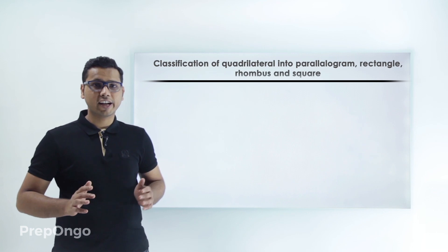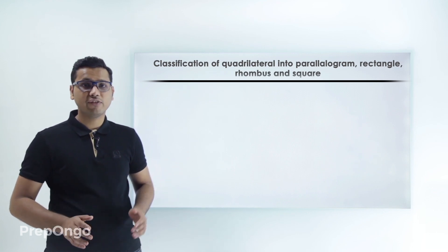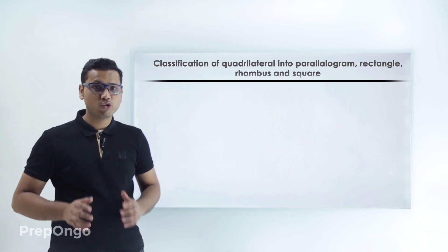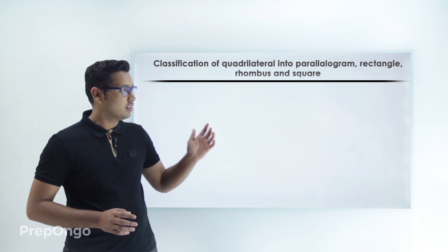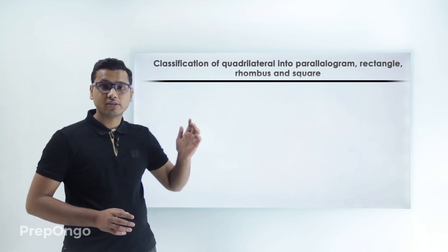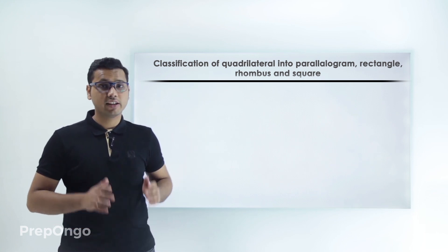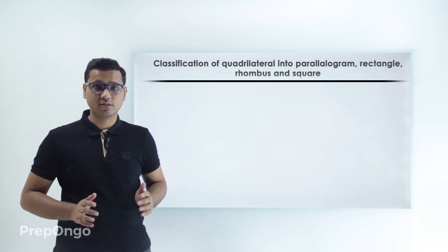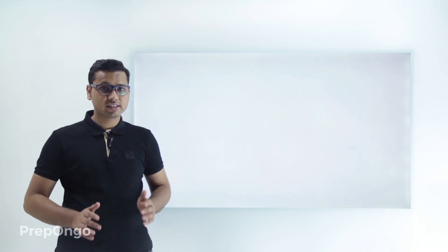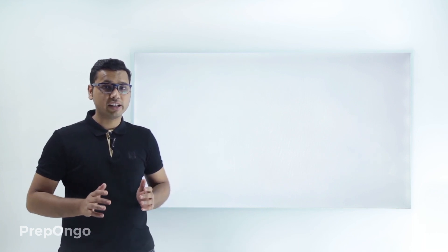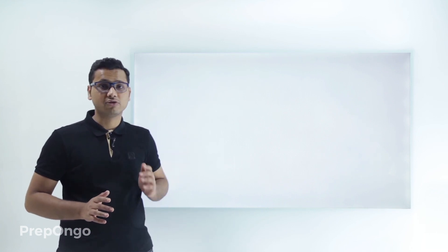Hello everyone. In this video we'll be learning how to classify a quadrilateral into a parallelogram, rectangle, rhombus, and square by using the distance method. So let us first see what are the properties of all these figures.